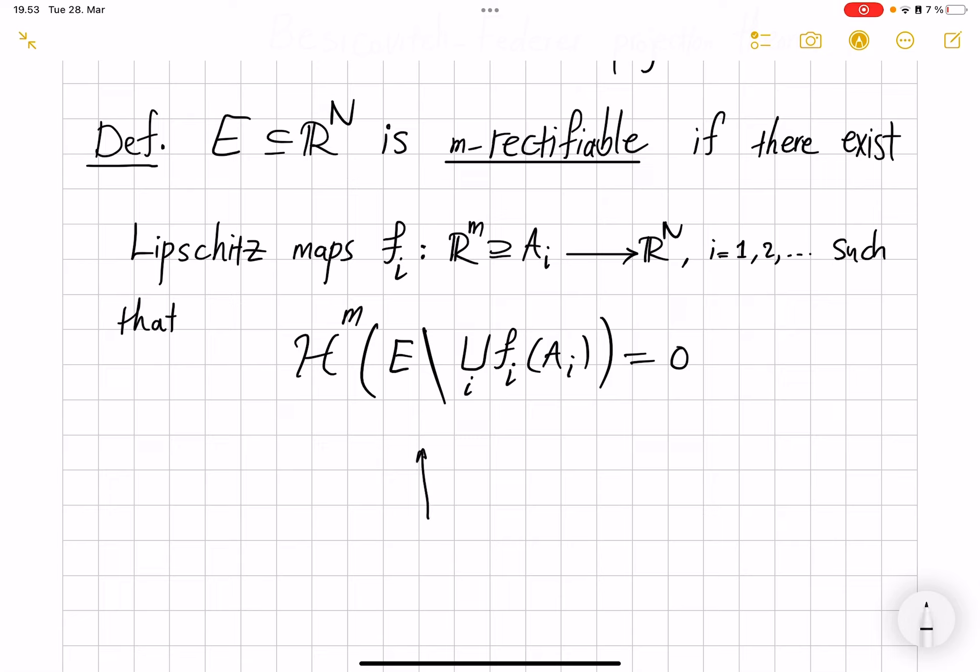In general, the idea of m-rectifiability is to generalize the notion of m-dimensional smooth submanifolds. So in this case, for example, if you have a nice smooth manifold two-dimensional sitting inside R^3, then this will be a 2-rectifiable set. But of course, countable union of such objects with possible self-intersections is still m-rectifiable.